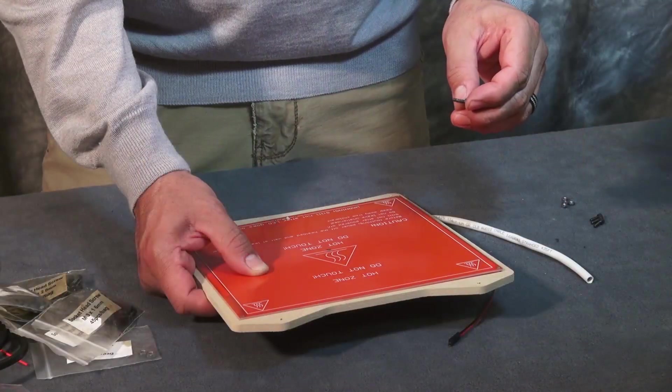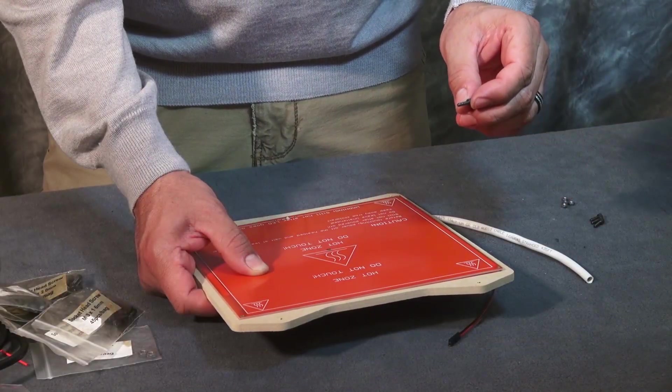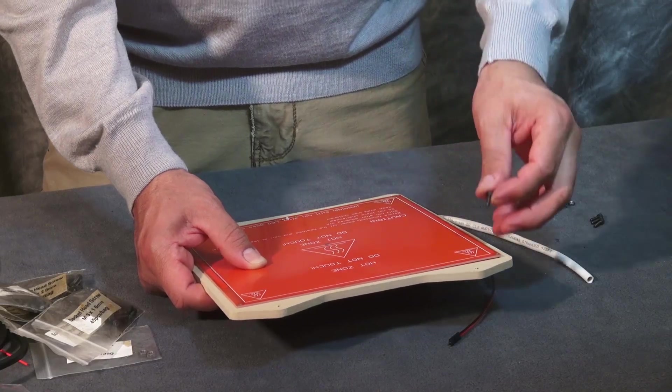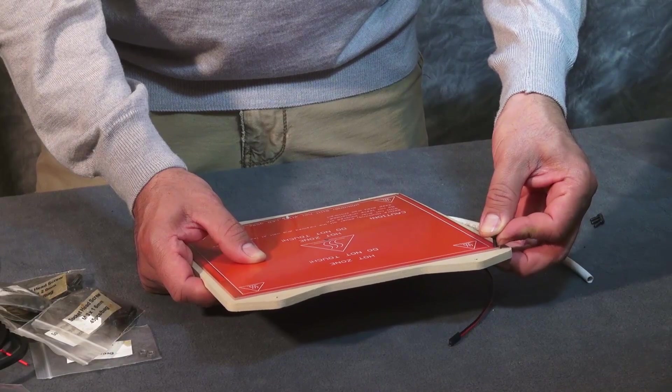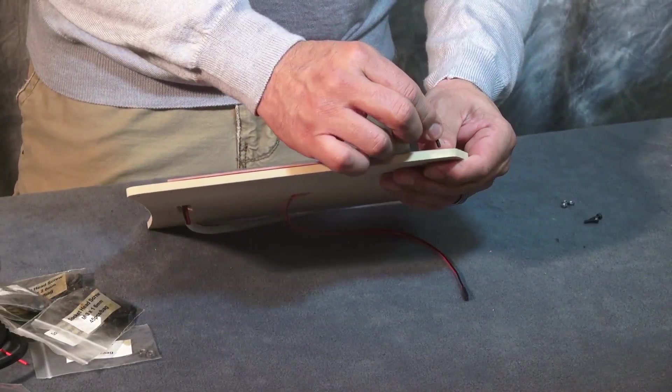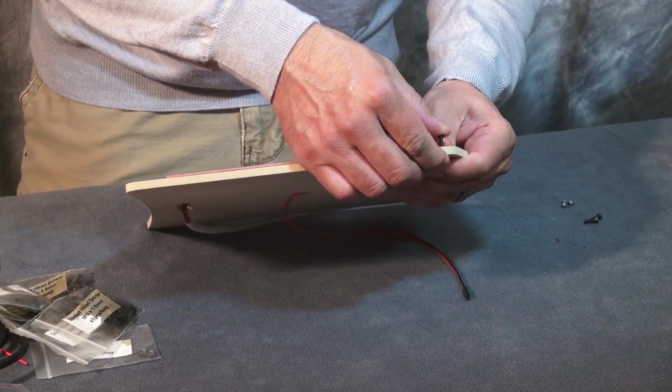Now to mount the heating bed to the board, you're going to need four M3 by 10 millimeter bolts and four M3 nuts. Be sure you don't over-tighten these on the heat bed to avoid damaging the heat bed.